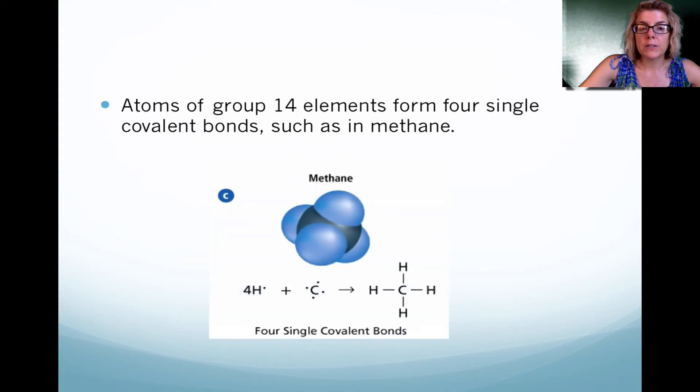Group 14, where carbon resides, four columns over, there's four empty spaces. As a result of those four empty spaces, carbon wants to have a total of eight valence electrons, so it forms four covalent bonds with another atom.